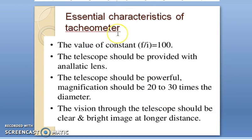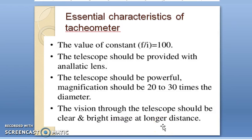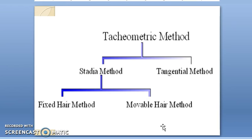The essential features of tachymetry are: the value of the multiplying constant f by i will be equal to 100, and the telescope should be provided with an analytic lens so that f plus c equals zero. The telescope should be powerful — the magnification should be 20 to 30 times the diameter — and the vision through the telescope should be clear and bright.